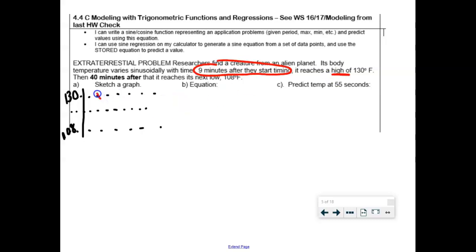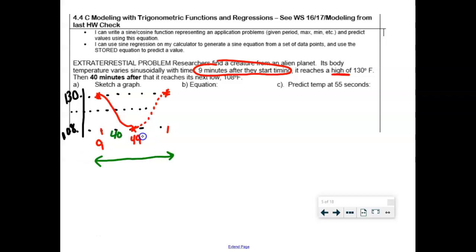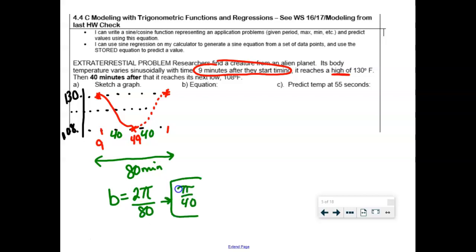You have to just accept there's going to be a phase shift — it makes the math easier. Nine minutes in is when it reaches the high point, so we have a high point at t = 9, and a low point at t = 49. What I'm really interested in is the period: from high to low is 40 minutes, and then another 40, so the period is 80 minutes. A mistake I saw was people only taking half the period. b = 2π/period = π/40.